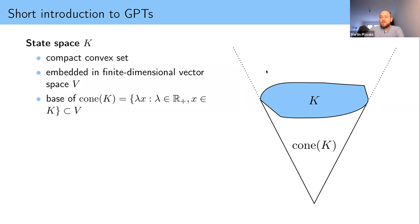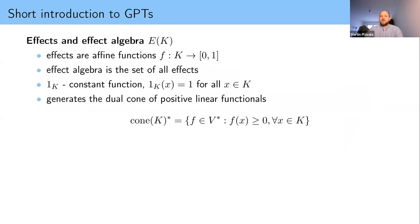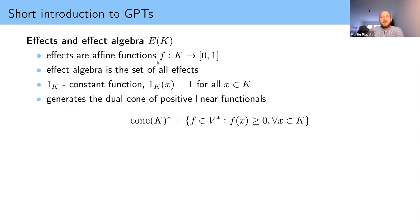We need to predict outcomes of experiments and do all the things we do in quantum information: compute Bell inequalities, do steering, work with channels. For this we need one more aspect of GPTs: the effect algebra. The definition is a little more involved. Effects are affine functions from the state space to the interval zero-one. They're affine because we want to respect the structure of convex combinations — if you have two states and take a convex combination, that's like preparing one half of the time and the other half of the time, and measurement outcomes must respect this mixing. They map to zero-one because we interpret outcomes as probabilities.